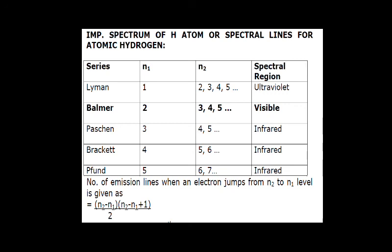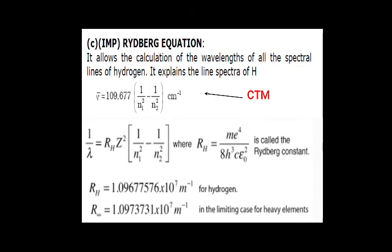This is a very important formula called the Rydberg equation. According to this formula, wave number (ν̄) is equal to 109677 multiplied by (1/n1² minus 1/n2²). Here n1 is the orbit to which the electron is coming, and n2 is the higher orbit number.